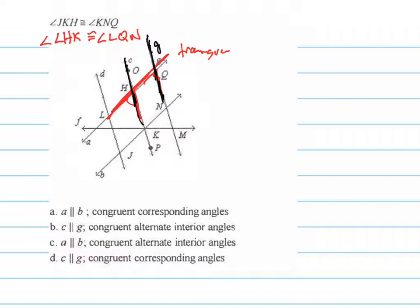So notice that we're going to be able to say that these two lines, G and C, are parallel to each other.